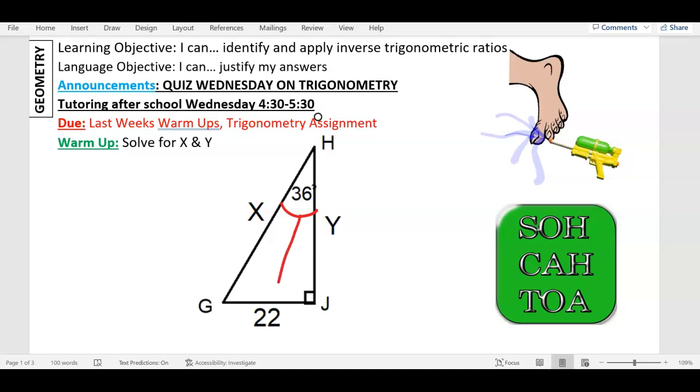So O is what? 22. H is across from 90. A is your leftover. Now, remember last week I said cross out the one that you don't know, but everything's labeled, okay? But what we're going to do is look for X first, so you're going to ignore Y. So if I'm ignoring Y, I'm going to ignore the A.